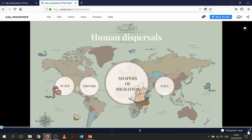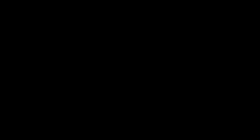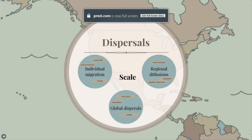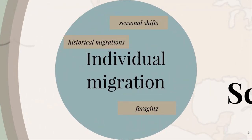I'll make it full screen so you can see better. As in any archaeological research, we have different scales of analysis and different research questions: individual migrations, regional diffusions, and global dispersals — you can use those names interchangeably. At the individual migration scale, we're looking at individual humans moving around — things like historical migrations, people moving from Europe to the US.